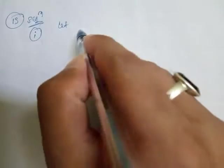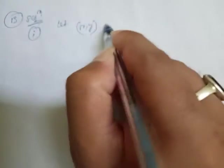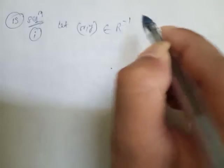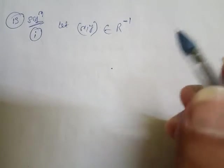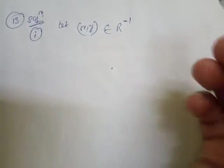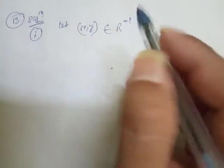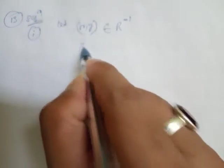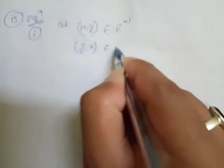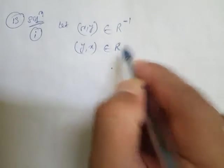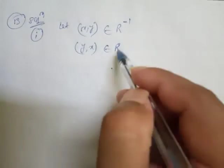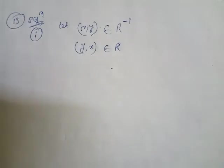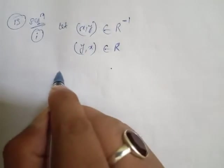Solution: for the first one, Roman I — let x comma y belong to R inverse. So if x comma y belongs to R inverse, then y comma x belongs to R.